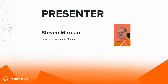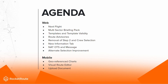My name is Stephen Morgan, I'm the Business Development Manager for Rocket Route. I've been with the company for six and a half years; prior to that I worked for Jettson, and my background is in aviation having worked for two commercial airlines. Today's agenda covers a variety of features and improvements on our web and mobile applications, including the next flight, multi-sector briefing pack, templates and template validity, route advisories, updates to step two and crew selection, the new information tab, NAT OTS, messages, alternate selection, geo-referenced charts, the visual route editor, and the upload document function.